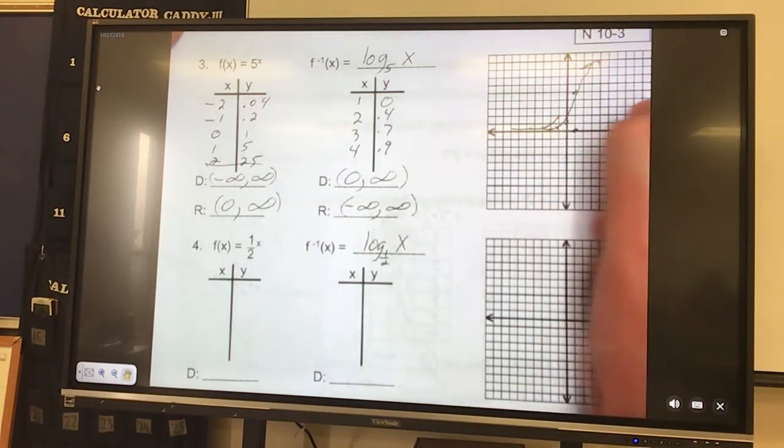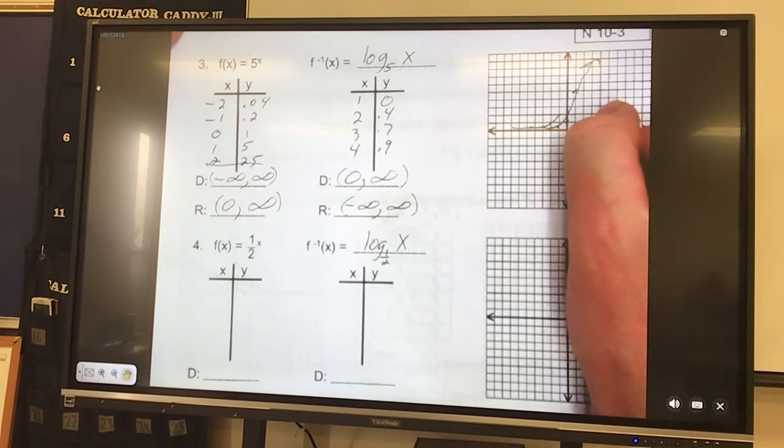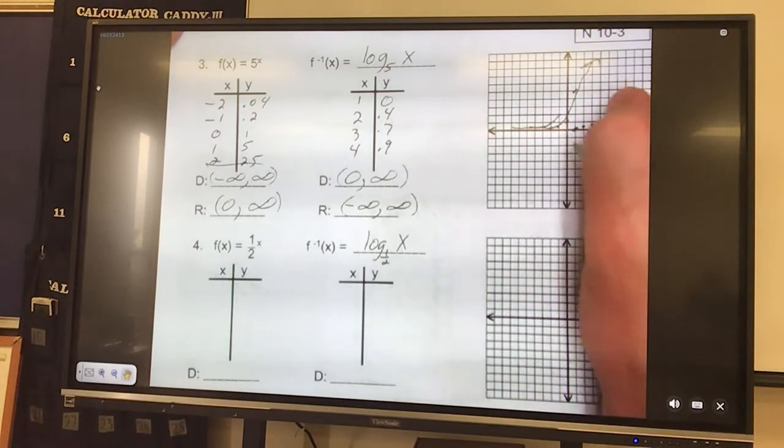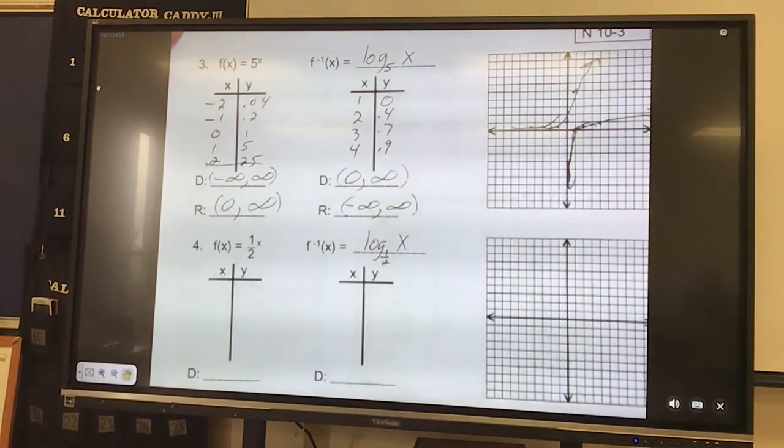So this guy is over 1, 0, over 2, 0.4, 3, 0.7, over 4, 0.9. And if you graph it, it goes close to the y but doesn't touch it, and it goes kind of sharply that direction.